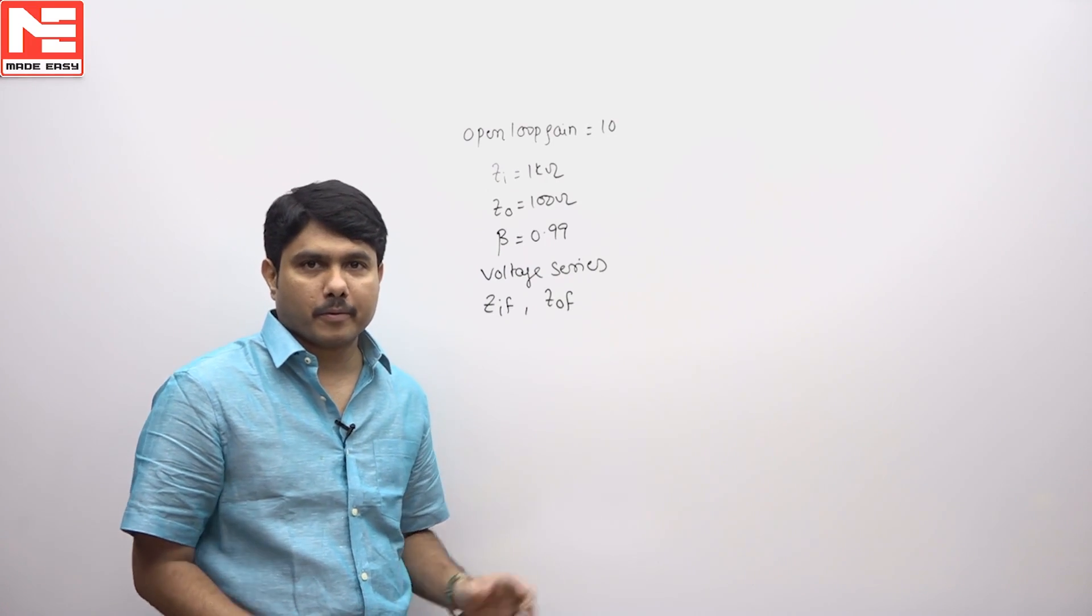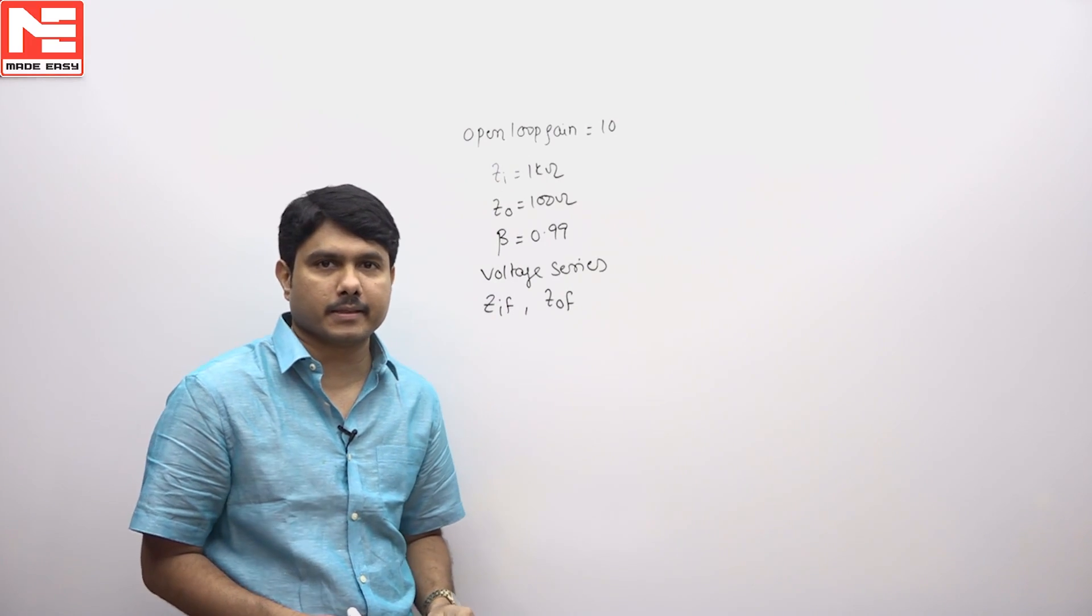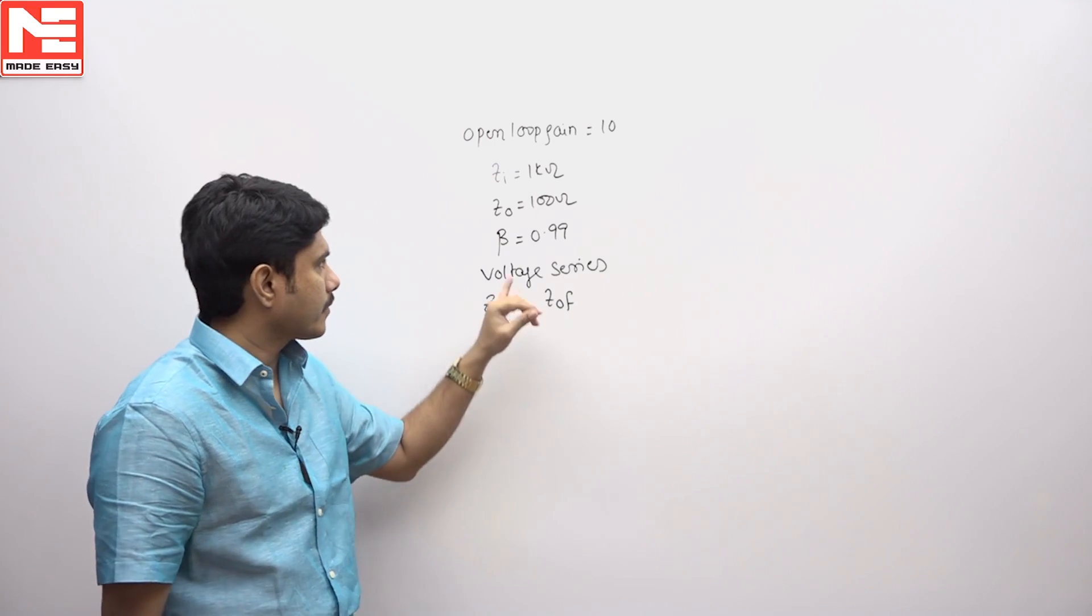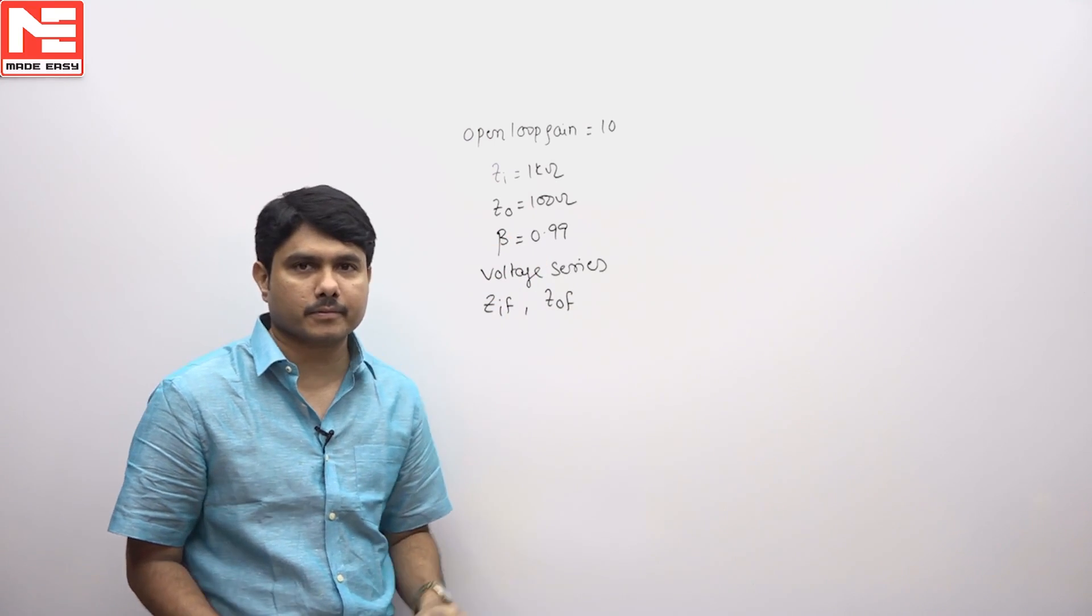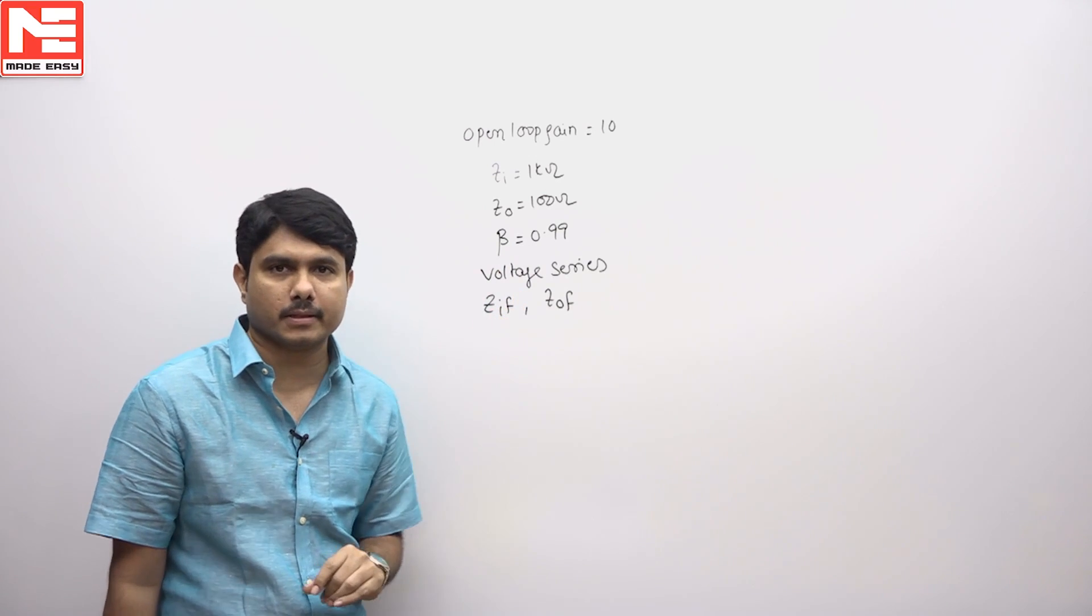This question is related to a feedback problem. The open loop gain is given as 10. Input impedance is 1 kilohm, output impedance is 100 ohms, and beta value is 0.99. It is a voltage series topology.